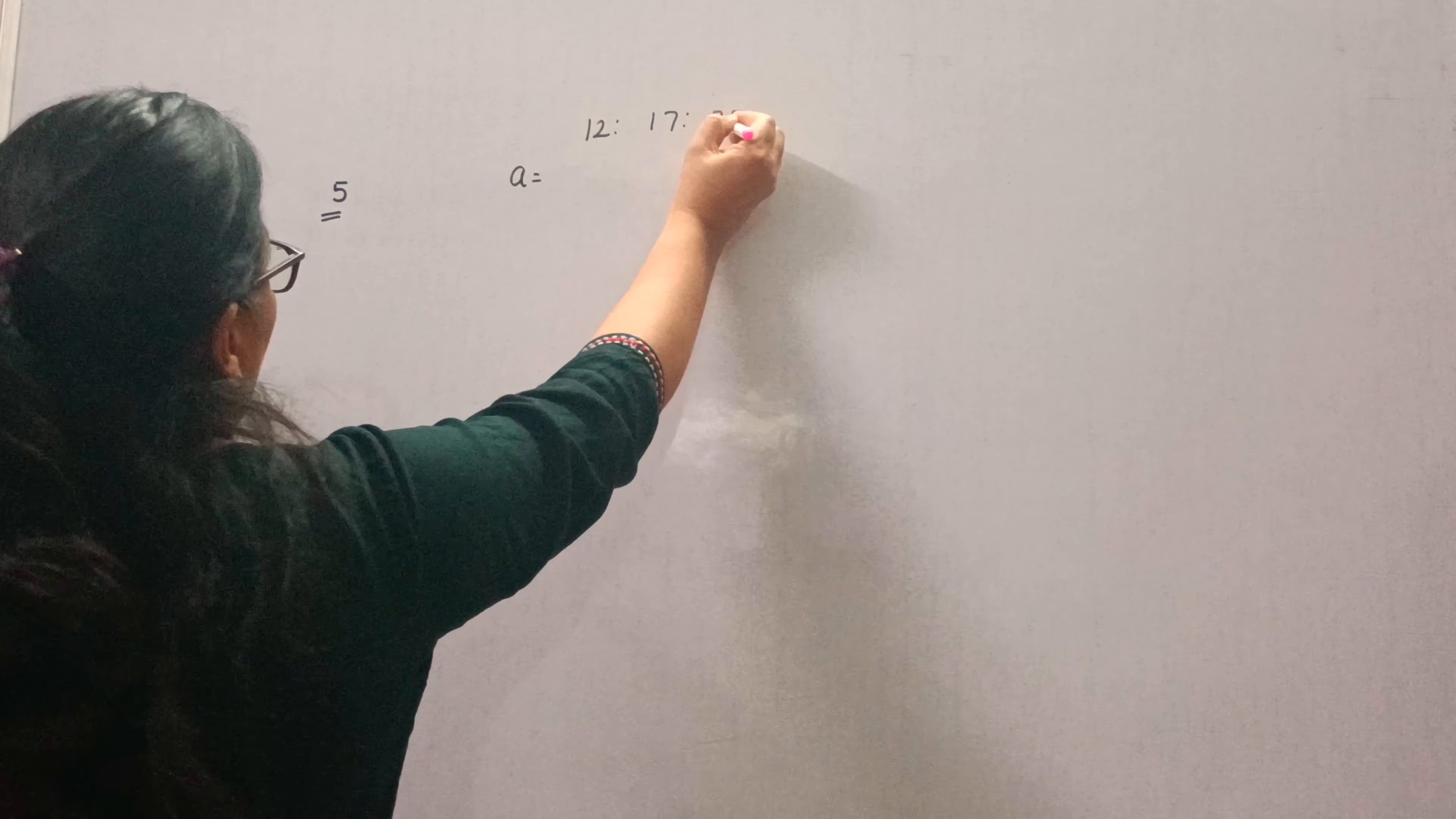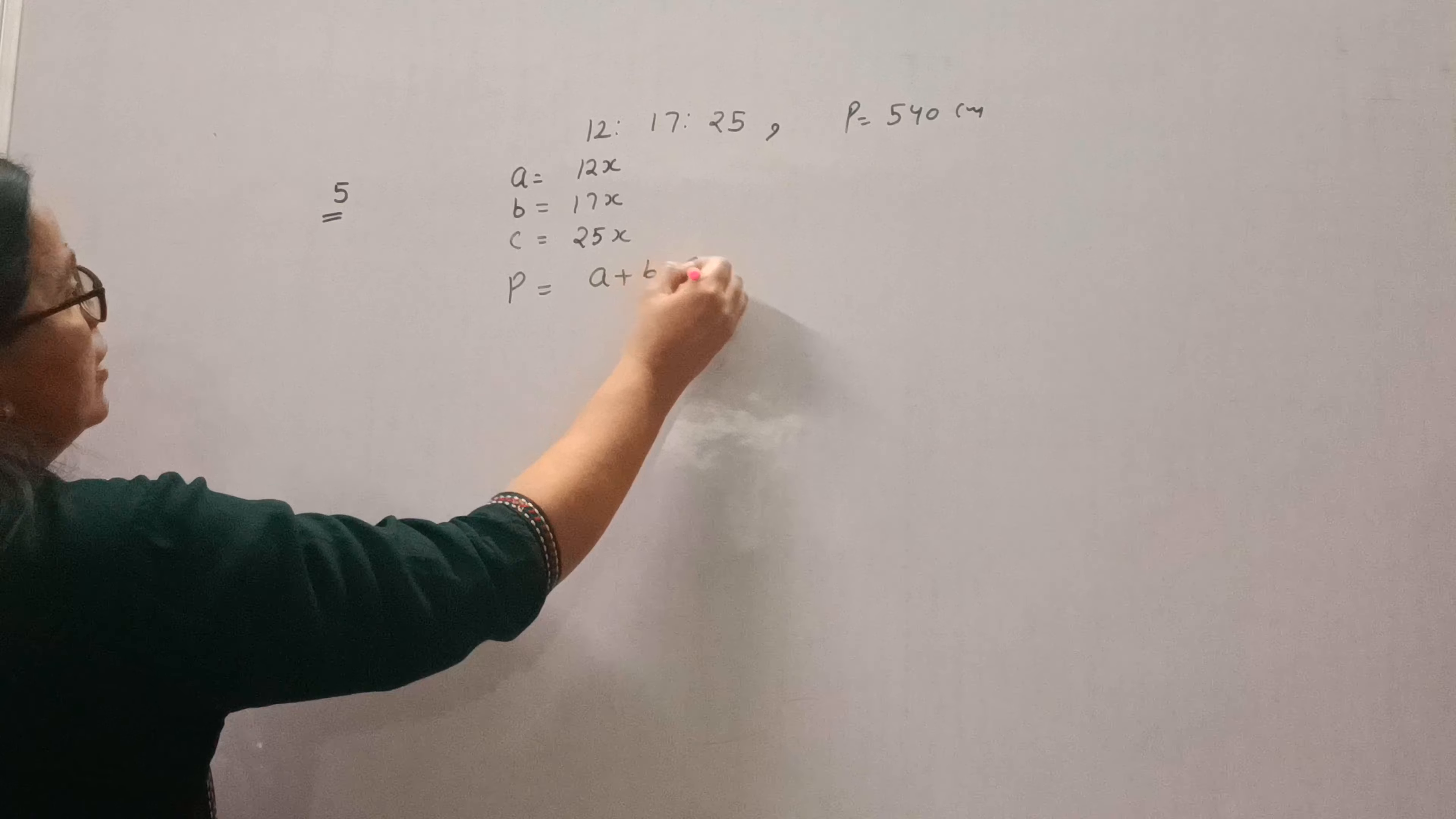So let the first side be 12x, second be 17x and third be 25x. We know perimeter is A plus B plus C.